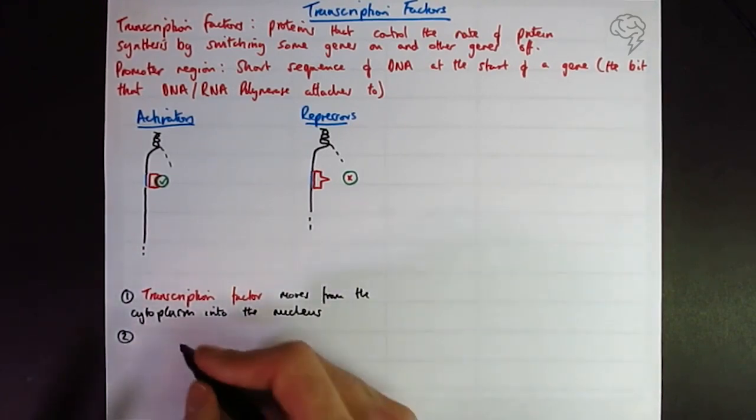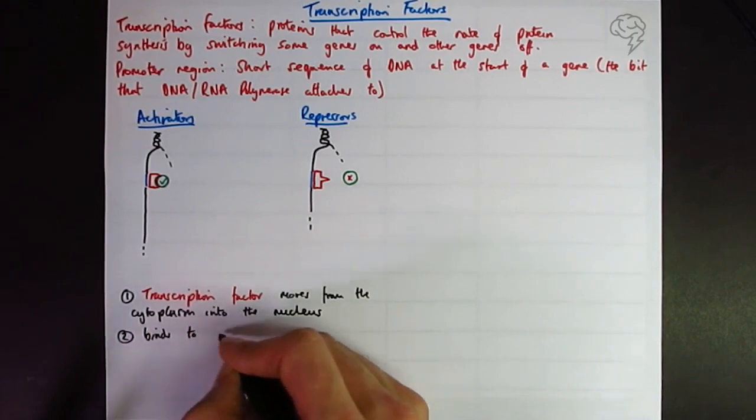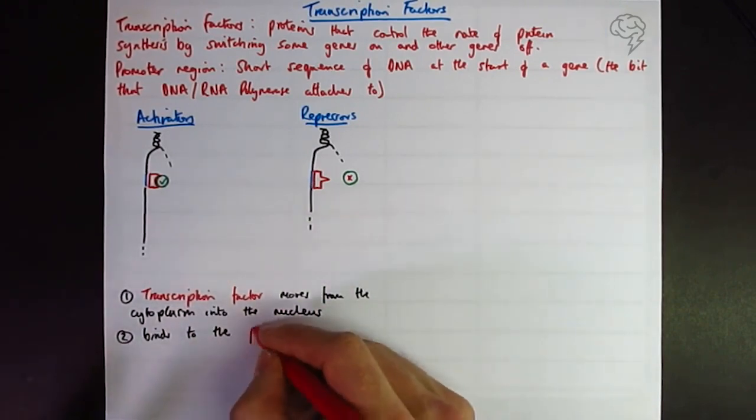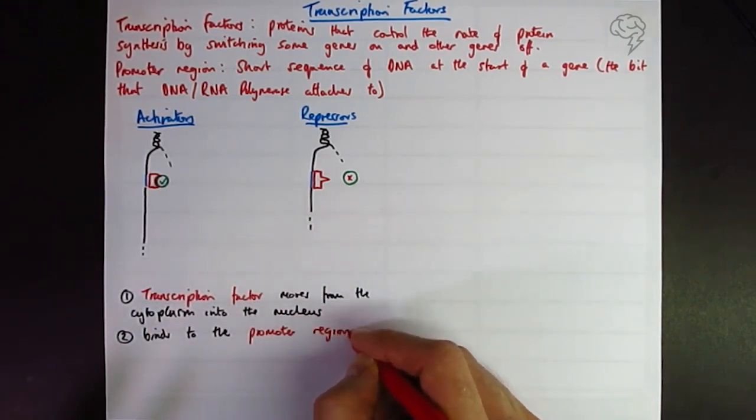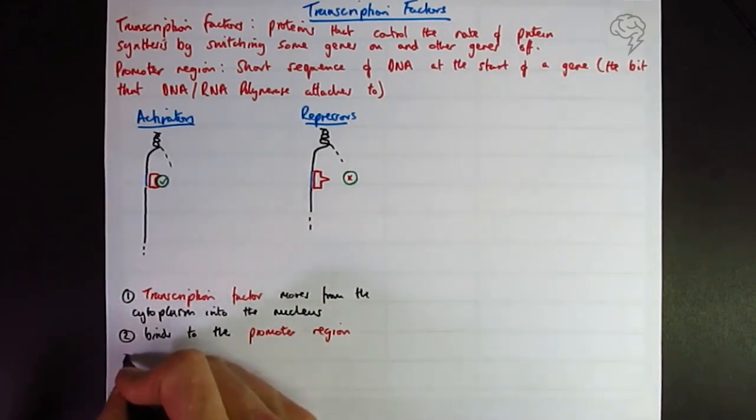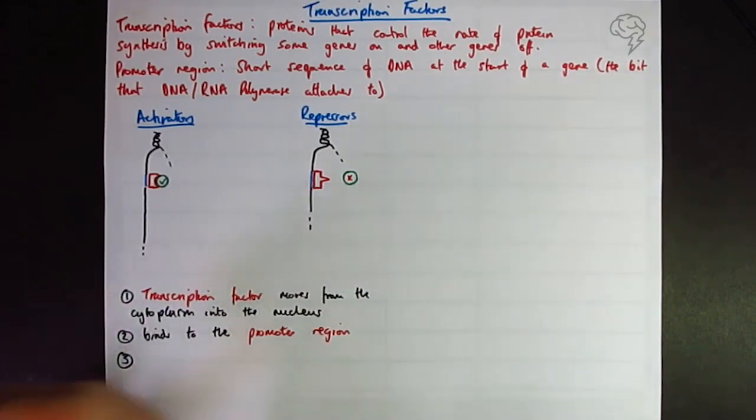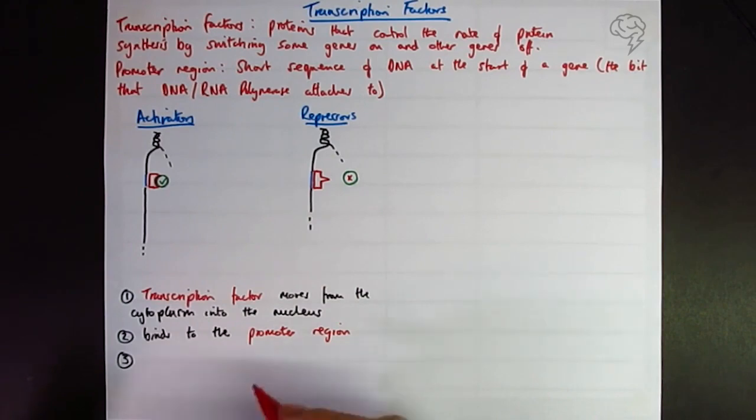Second thing it does is bind to the promoter region. Number three, we can say we're going to treat these differently. We can say activators are going to help RNA polymerase to bind.